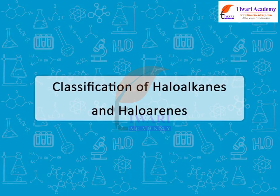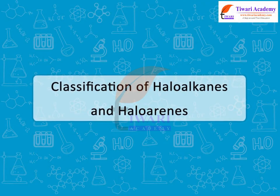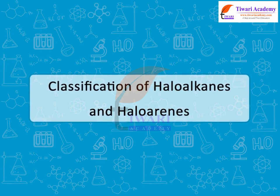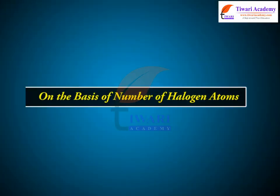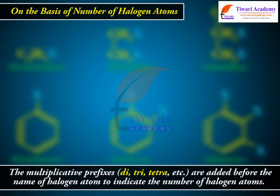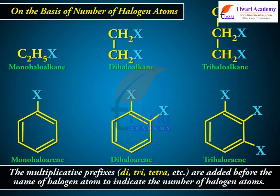Classification of haloalkanes and haloarenes. On the basis of number of halogen atoms, the multiplicative prefixes di, tri, tetra, etc. are added before the name of the halogen atom to indicate the number of halogen atoms.